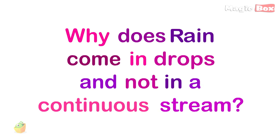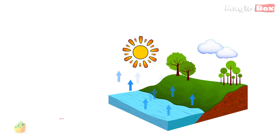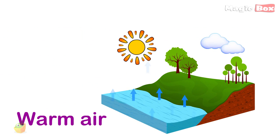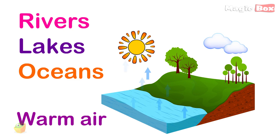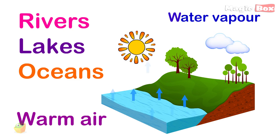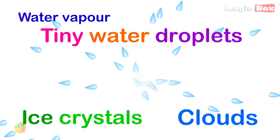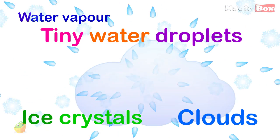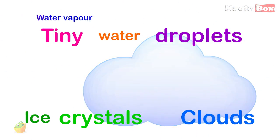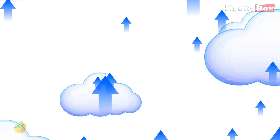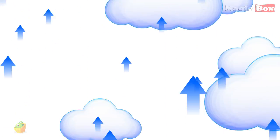Why does rain come in drops and not in a continuous stream? Warm air turns the water from rivers, lakes and oceans into water vapor that rises into the air. The water vapor forms clouds which contain small drops of water or ice crystals. As the clouds rise higher and higher, the air gets colder and colder.